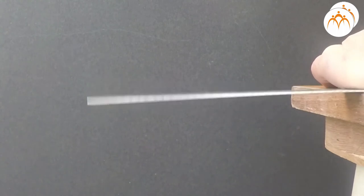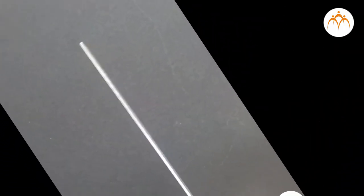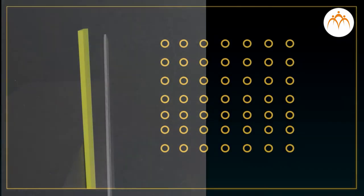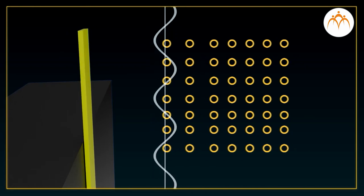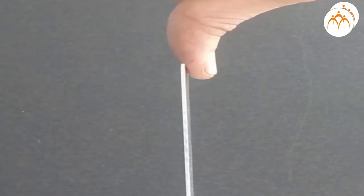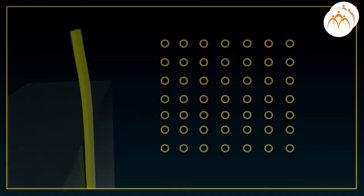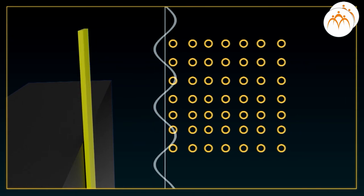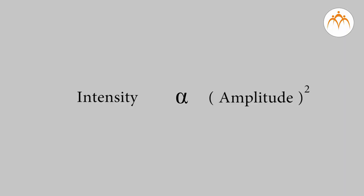When objects vibrate, sound waves are introduced in the medium. The medium transports energy from one particle to another. The amount of energy transferred to the medium is due to the vibrating object. More the energy applied for objects to vibrate, the more the amplitude of vibrations.